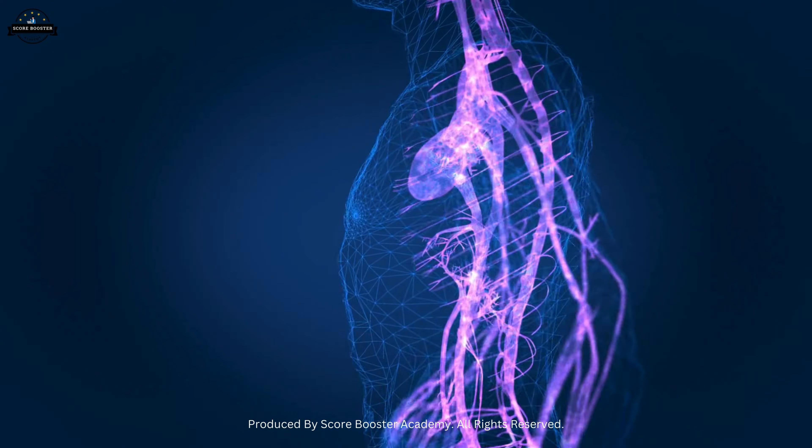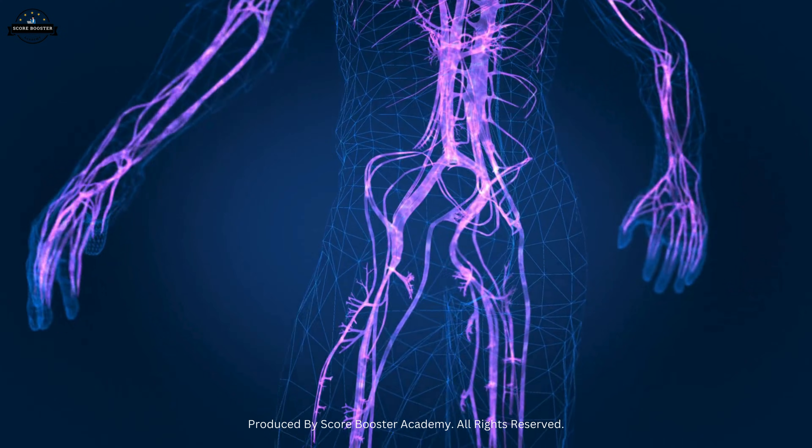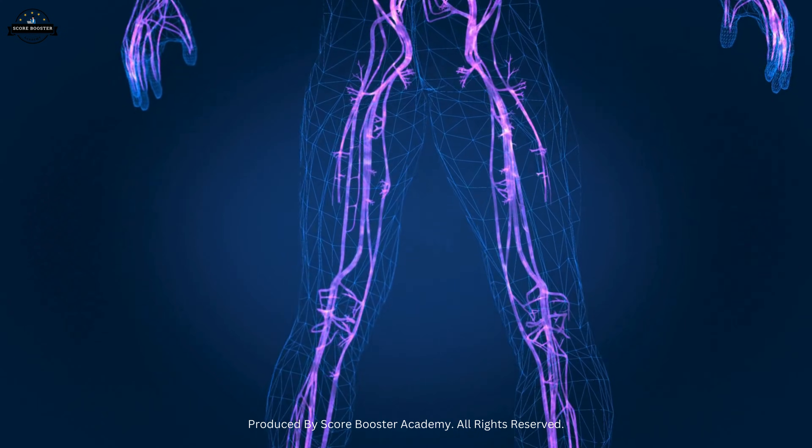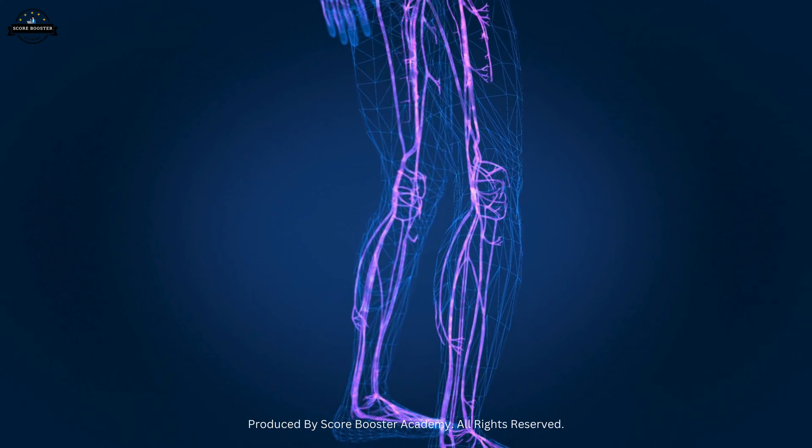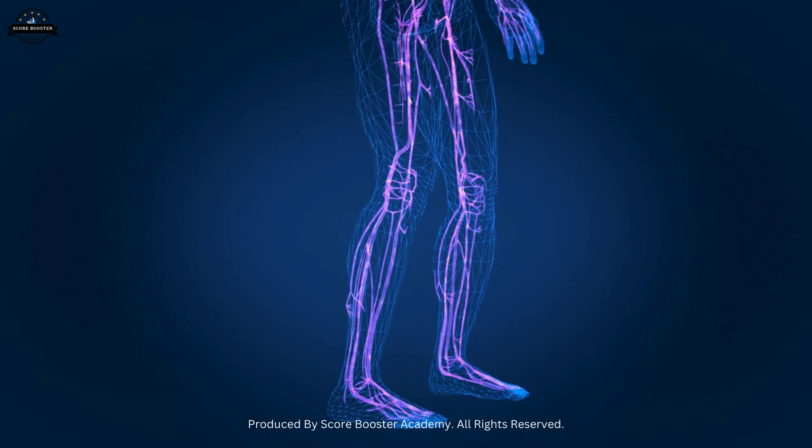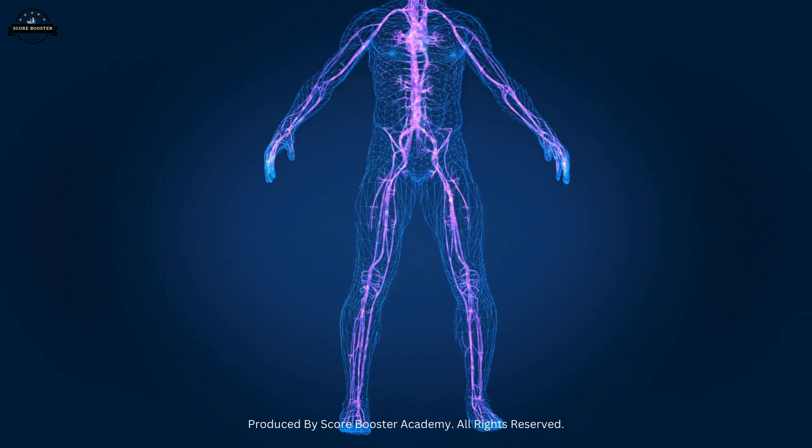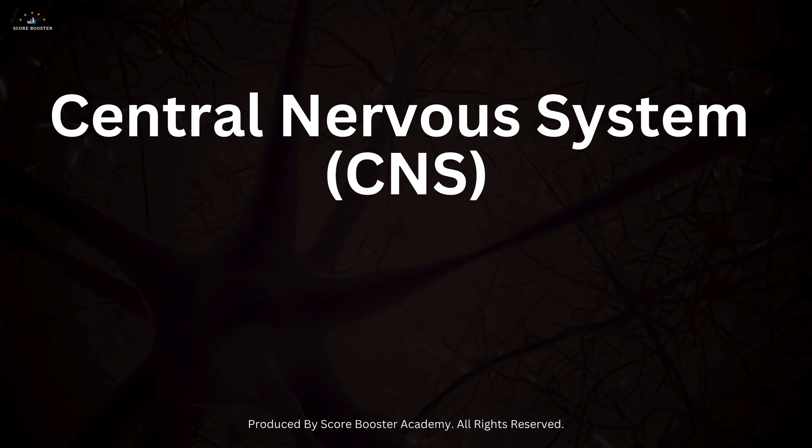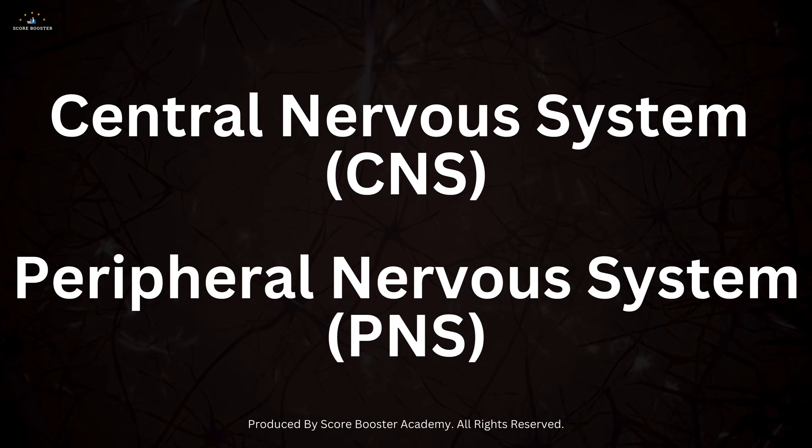The human nervous system is a complex network that manages communication between different parts of the body, ensuring that we can respond to our environment swiftly and efficiently. It comprises two main parts: the central nervous system and the peripheral nervous system.